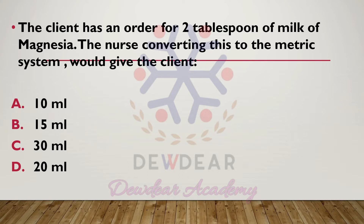The client has an order for two tablespoons of milk of magnesia. The nurse converting this to the metric system would give the client: options 10 ml, 15 ml, 30 ml, or 20 ml. The correct answer is option C — 30 ml.